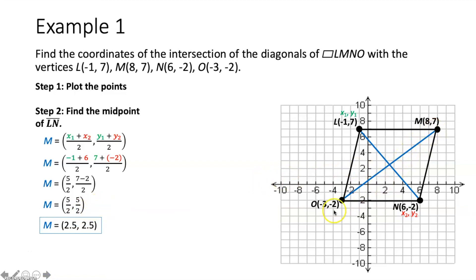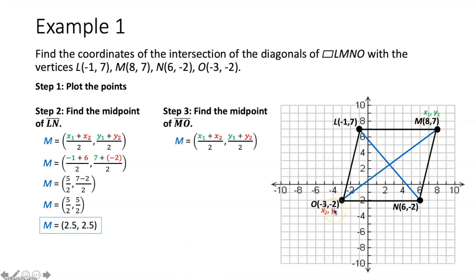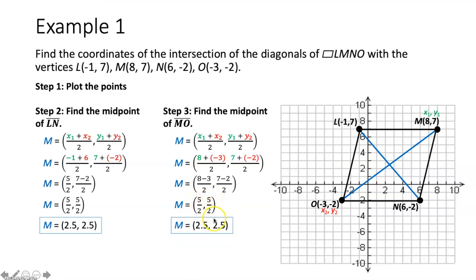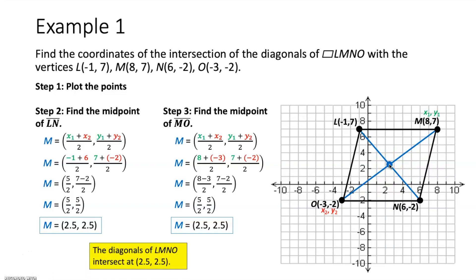Now let's verify with segment MO. We plug in the coordinates: 8 plus negative 3 is 5, and 7 plus negative 2 is 5, giving us (5/2, 5/2) or (2.5, 2.5). The midpoint of each diagonal is the exact same point, confirming the diagonals bisect each other. So the intersection of the diagonals is (2.5, 2.5).